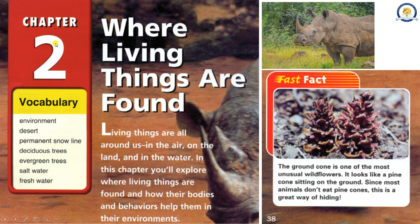Chapter 2. Vocabulary: Environment, Desert, Permanent snow line, Deciduous trees, Evergreen trees, Salt water.